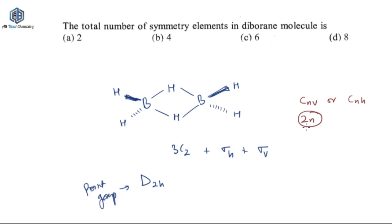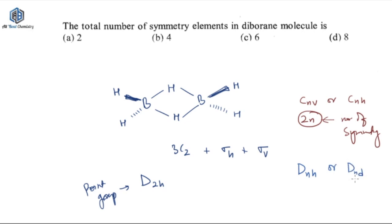So 2N is the number of symmetry elements for CNV or CNH type point groups. Whereas if your molecule has a DNH or DND type point group, the number of symmetry elements is given by 4N.